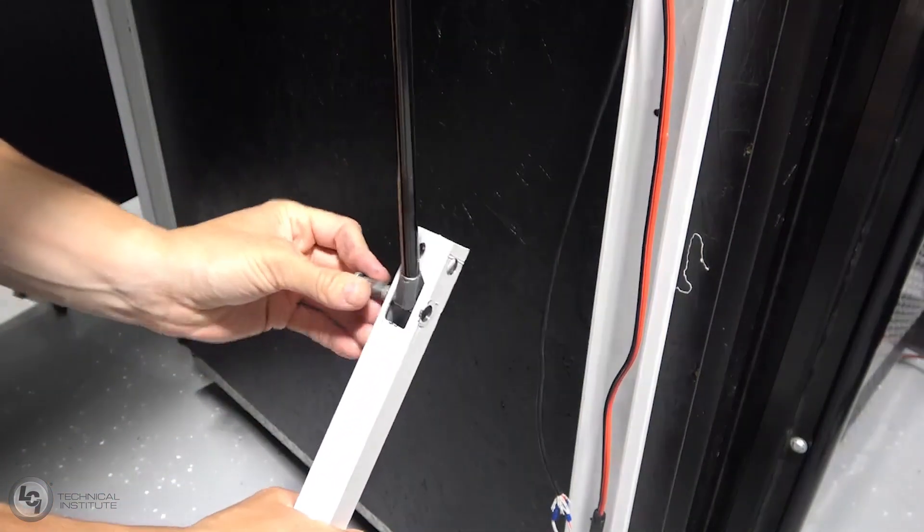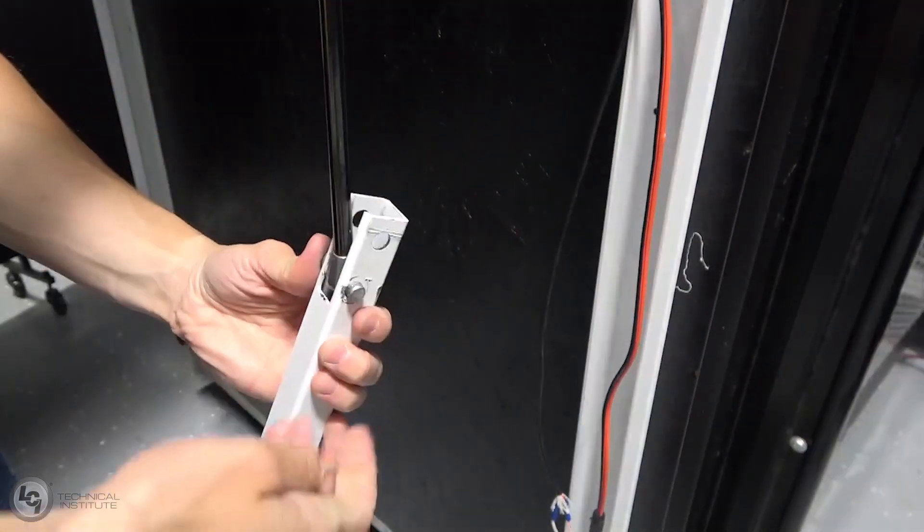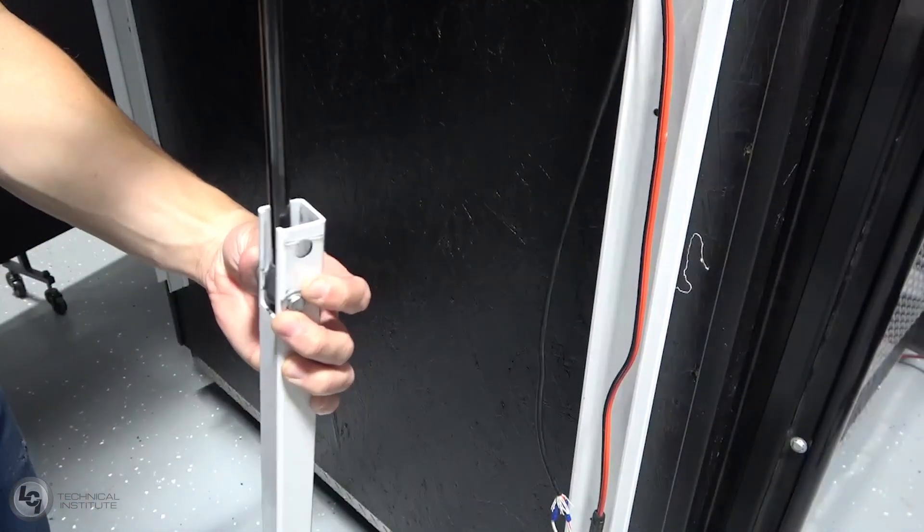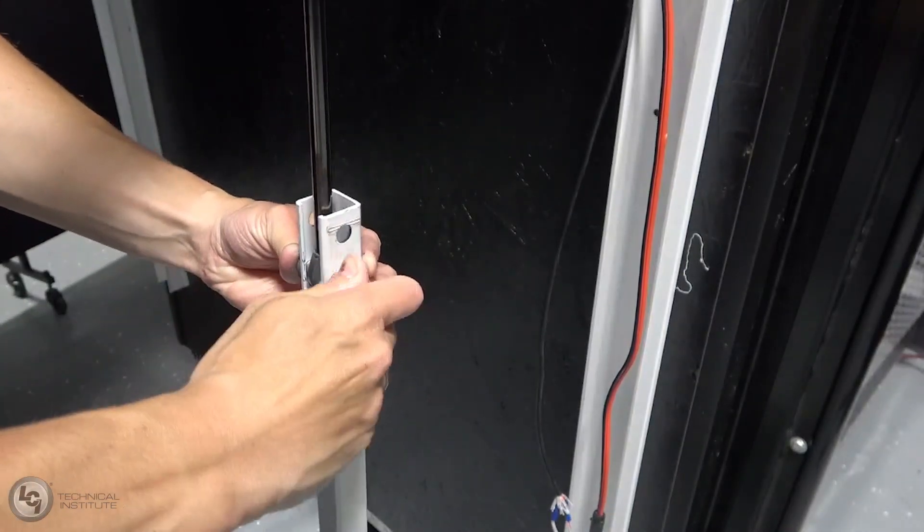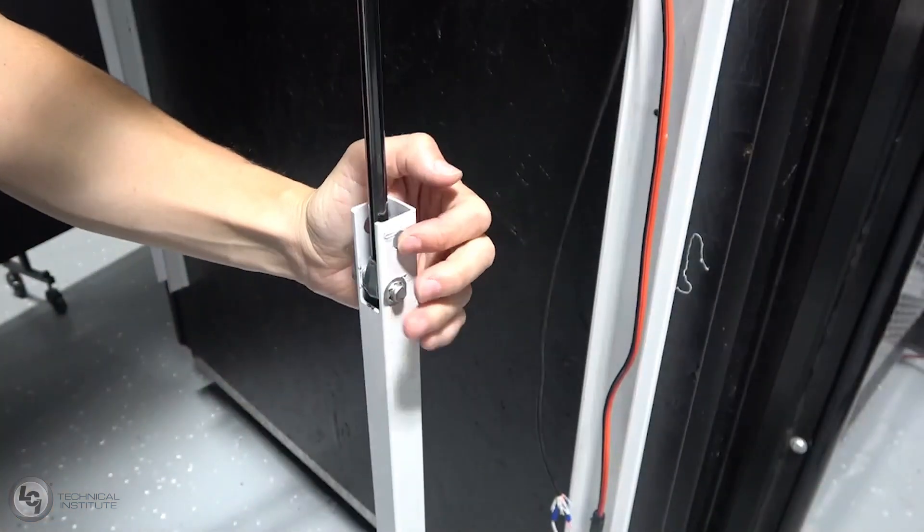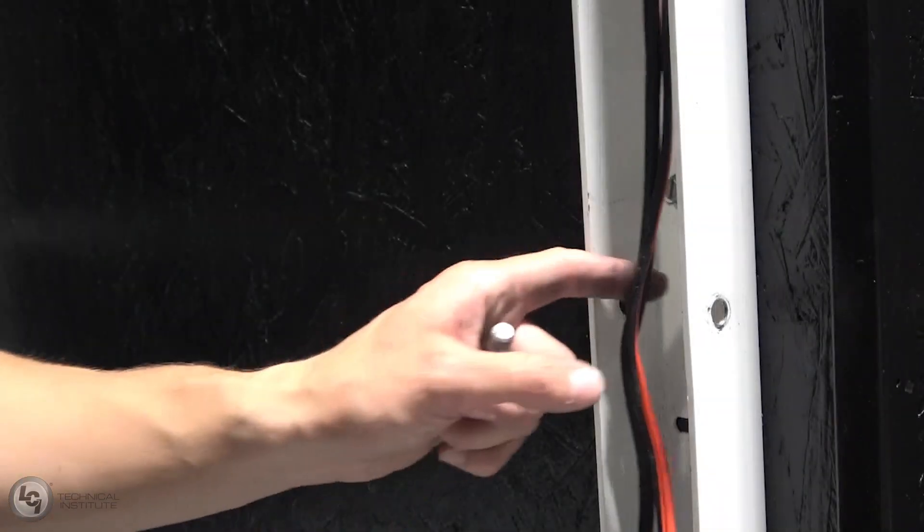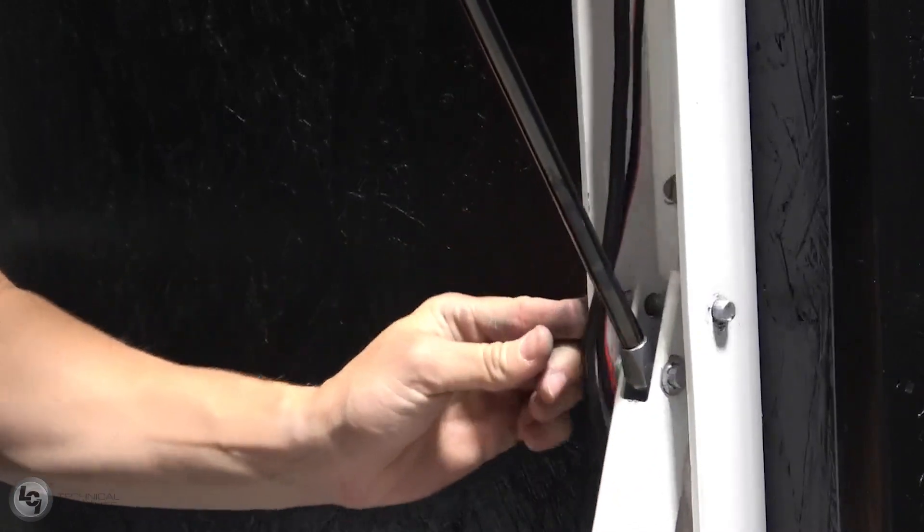As we secure these components back in place, we'll be using a 7-16ths socket to push the push nuts down onto the pins and make sure they're properly secured. Be careful that no wires are pinched in the process of putting the pins back together on the awning.